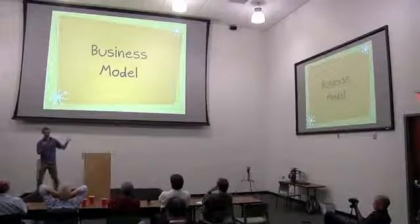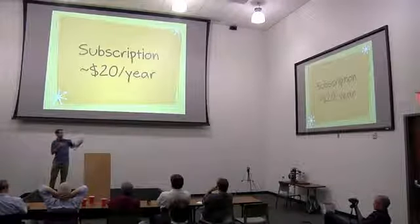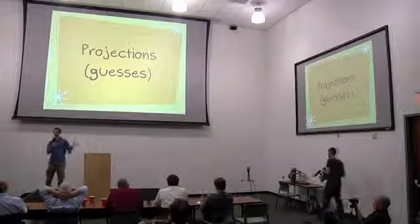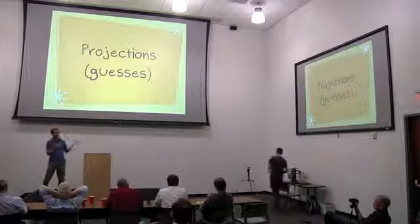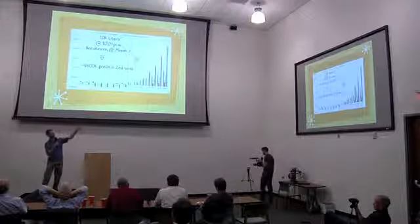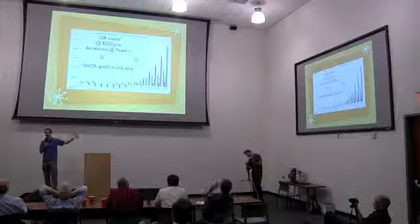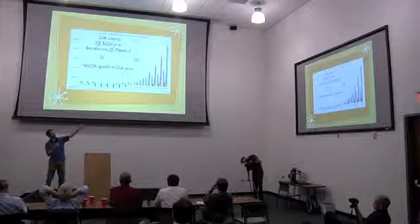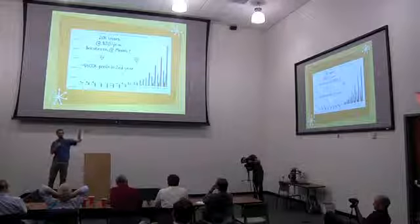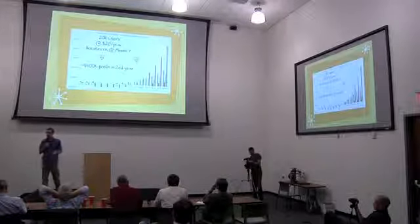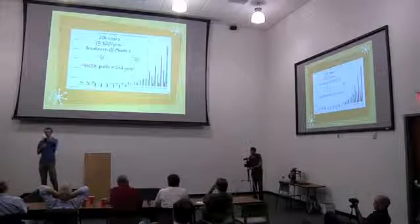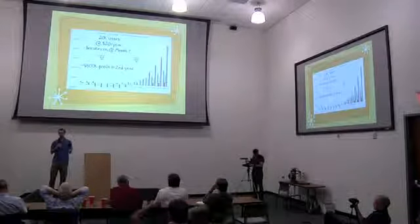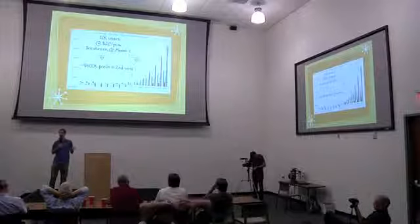So next up, business model. Subscription — 20 bucks a year. We said okay, that's our idea. Now, what are our projections? If we had 20 bucks per year per user, here's the graph. If by the end of the first year we had about 1,000 people per month with a little growth, that's around $20 per year. Breakeven is in about seven months. And if in the next year we could just double that — not a big exponential thing, just double the number of users — we think we could make about $500 grand in profit because we're talking about not a lot of fixed costs and not a lot of development.